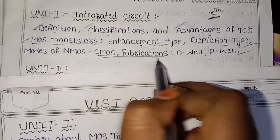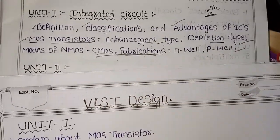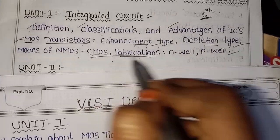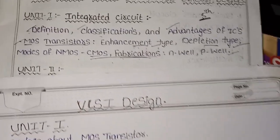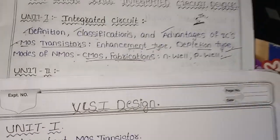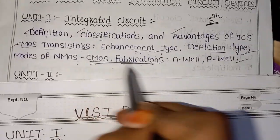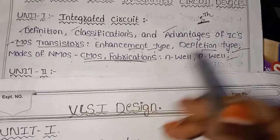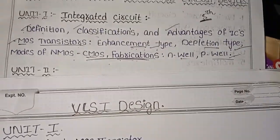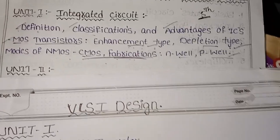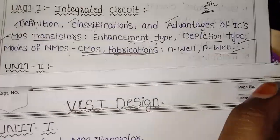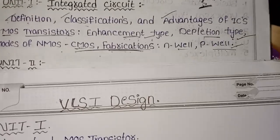CMOS Fabrication includes symbol representation and diagrammatic explanation. The definition is also diagrammatic. CMOS Fabrication is a 10-mark topic covering N-well and P-well. For 5 marks, CMOS Fabrication includes symbol representation and definition for N-well/P-well.